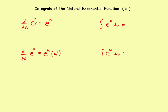Now onto the integrals. If the derivative of e to the x is e to the x, then the integral of e to the x is also e to the x plus c — it's its own original function plus c. If the exponent is something more complicated than just x, you have to use u-substitution, and it falls into the form: the integral of e to the u equals e to the u plus c. In general, you'll use this second rule because almost all problems involve u-substitution.